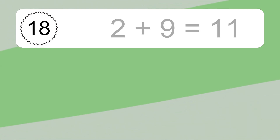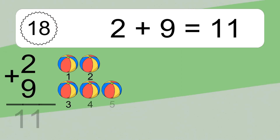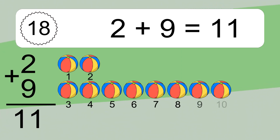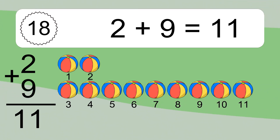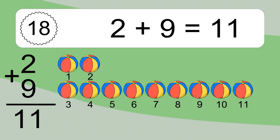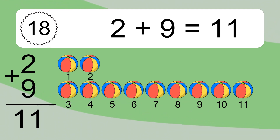Two plus nine equals eleven. Let's count it: one, two, three, four, five, six, seven, eight, nine, ten, eleven.